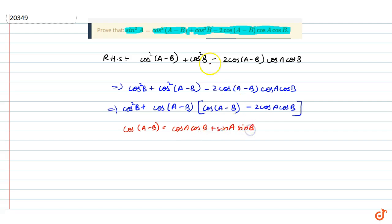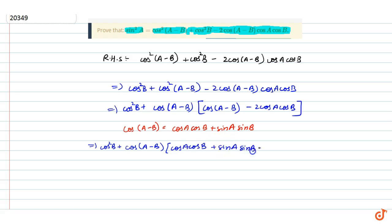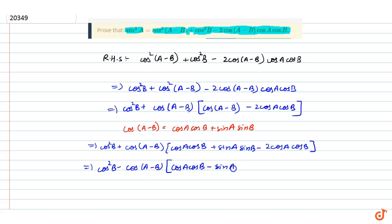If we substitute, we have sin squared(a minus b) plus cos a cos b plus sin a sin b, minus 2 cos a cos b plus sin a sin b, minus 2 cos a. Then we have cos squared b minus cos(a minus b) into cos a cos b minus sin a sin b.